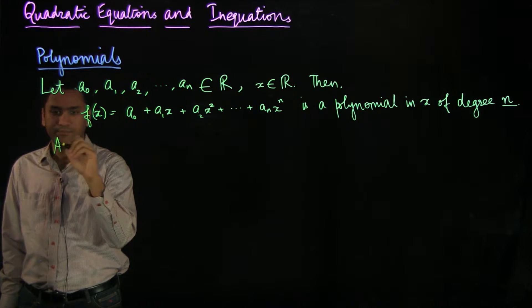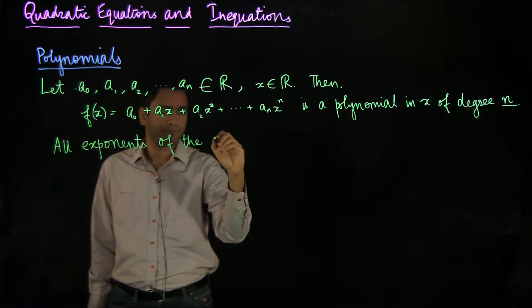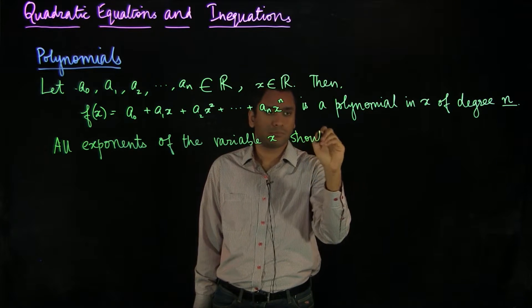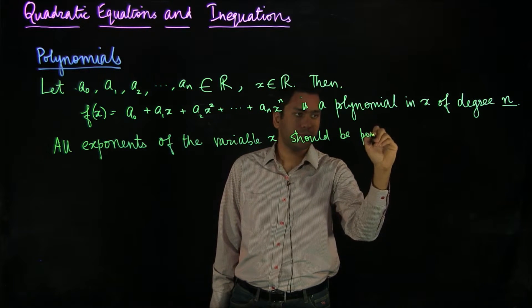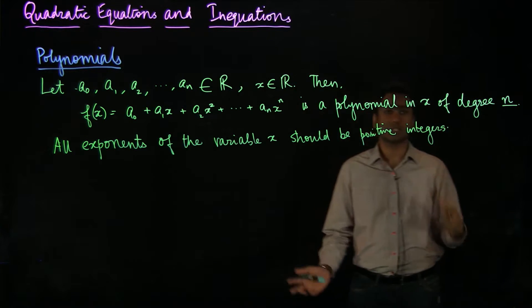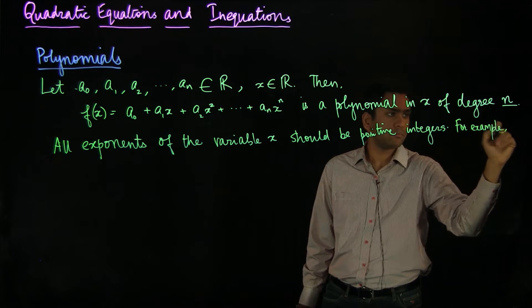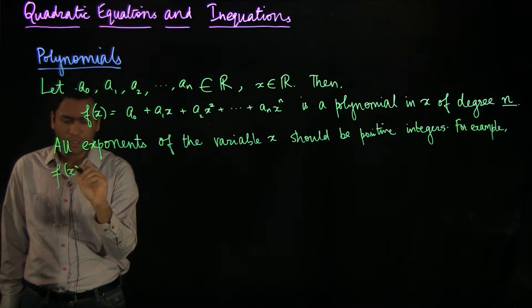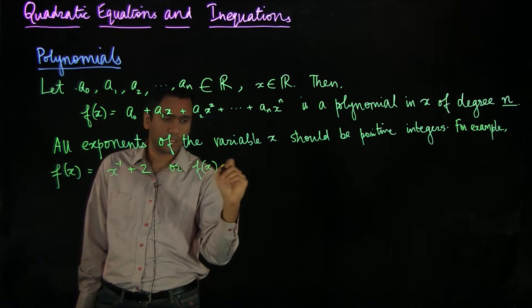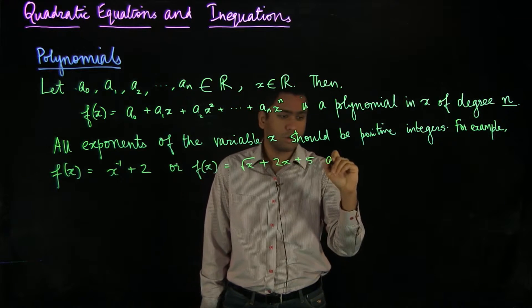All exponents of the variable x should be positive integers. They cannot be fractions or negative numbers. For example, f(x) equals x to the minus 1 plus 2 or f(x) equals square root of x plus 2x plus 5 are not polynomials.